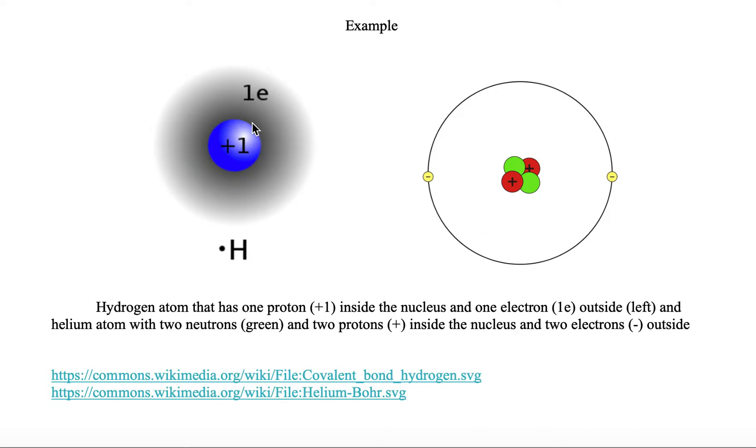In the nucleus of the hydrogen atom, which is this blue circular item, we see a plus one, which is a positive charge for a proton. We have a single proton in the nucleus of a hydrogen atom.